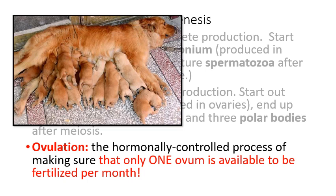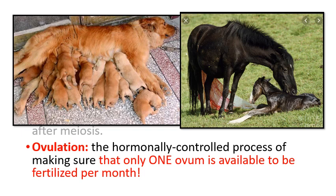Some animals can handle having many babies at once — the average litter for a dog or rat is 10 to 12. But more sophisticated mammals generally give birth one at a time. A horse, for example, very rarely gives birth to more than one offspring at a time.